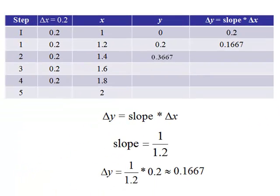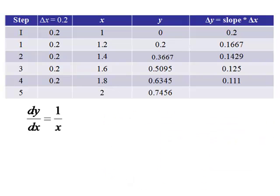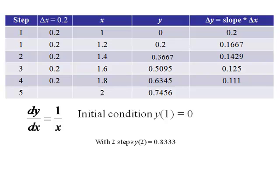So now why don't you see if you can find the rest of this table and get your estimate for y of 2. So here are our values for the rest of this table. With an initial condition of y of 1 equals 0, we saw with two steps y of 2 was about 0.833. With five steps, we see that it's about 0.7456. Remember, we said the actual is about 0.6931, so quite a bit of improvement with five steps over 2.